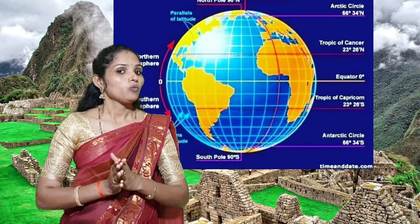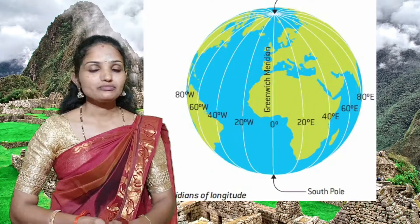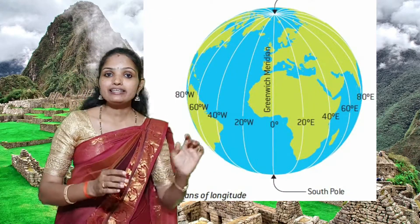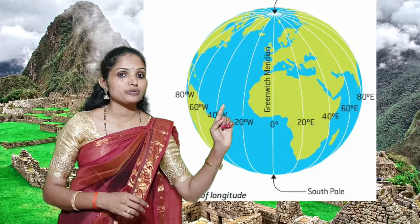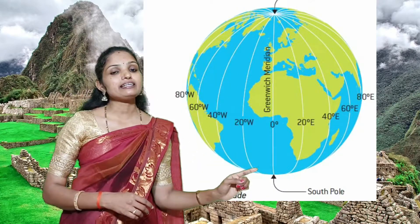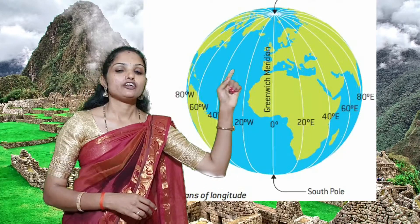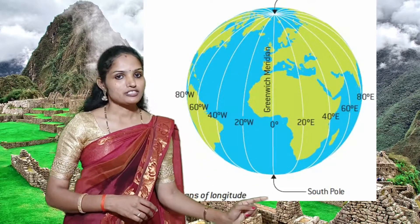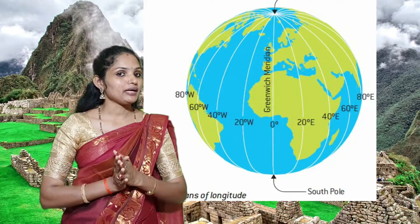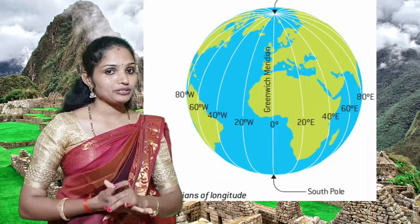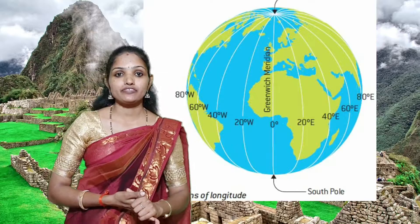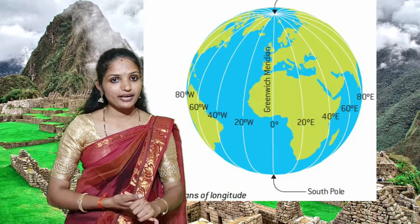And what is longitude? Longitude means the vertical lines - see the picture, students - the vertical lines which run from north to south. And the important longitude is the Prime Meridian, or Greenwich Meridian.